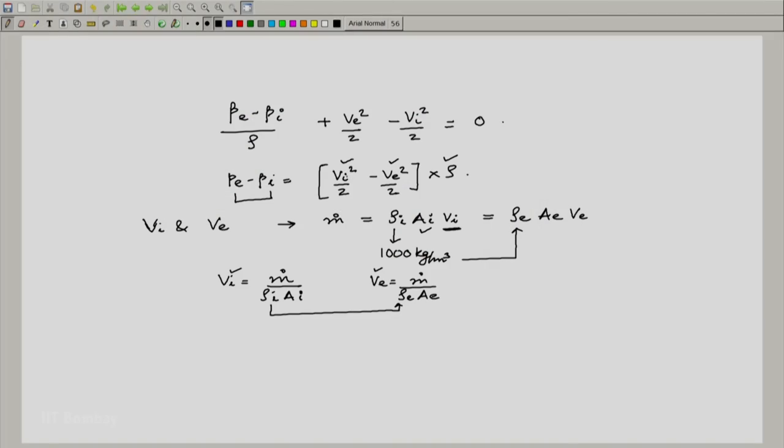What one should realize is that the inlet velocity would be lesser than the exit velocity because as you go to lower cross sections ve would be higher. Hence vi² - ve² would be a negative quantity and hence pe - pi would be a negative quantity, which means the pressure at the throat would be lower than the pressure at the inlet and that is what we had mentioned all along right from the beginning. Thank you.